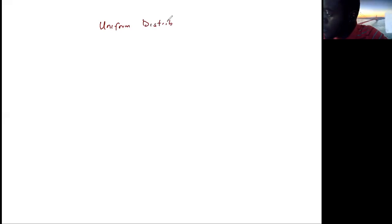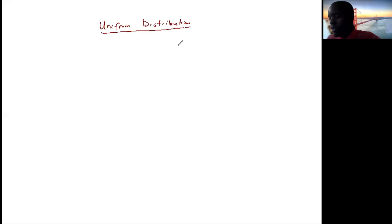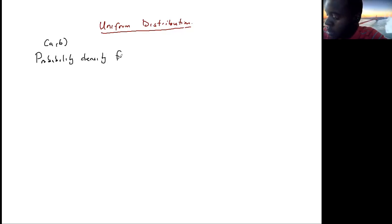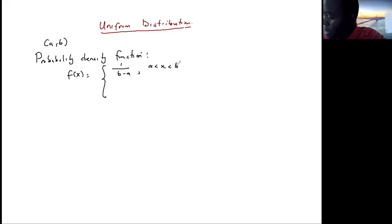We want to look at the uniform distribution. This is a special continuous probability distribution that ranges only between a and B. The probability density function is f(x) equal to 1 over (B minus a), provided a is less than x which is less than B, and it will be zero otherwise.